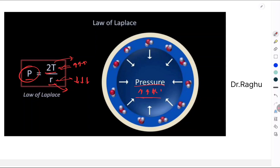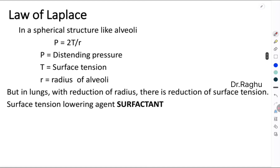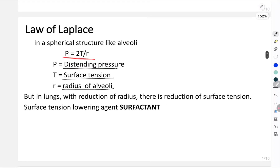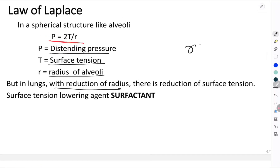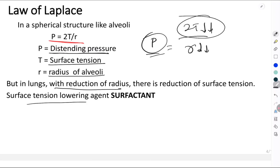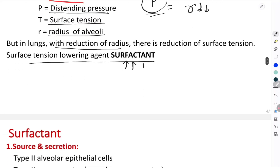As explained by the LaPlace Law, in a spherical structure like the alveolus, P = 2T/R, where P is the distending pressure, T is the surface tension, and R is the radius. In the lungs, when the radius reduces, there is also a reduction in surface tension, so the pressure is maintained. The agent responsible for reducing surface tension is called surfactant.